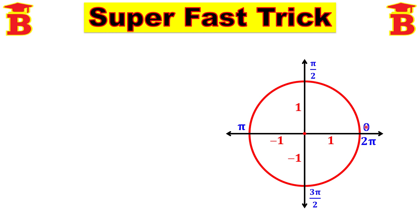Starting from 0, we write pi by 2, pi, 3 pi by 2, 2 pi. So 2 pi is 1 full rotation. After 1 rotation we can continue the angles: after 2 pi we get 5 pi by 2, then 3 pi, then 7 pi by 2, then 4 pi. This is the 2nd rotation, and similarly we can continue.